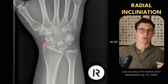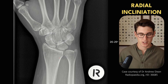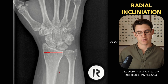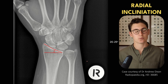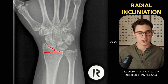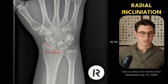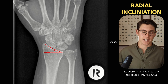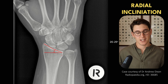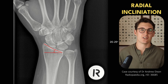Next we can look at what's known as radial inclination. If we take our radius and draw a perpendicular line to the shaft, we can then draw a line along the articular surface and measure this angle — that's the radial inclination angle. That angle should be between 20 and 25 degrees. If we're dealing with less than 15 degrees, we should really suspect some form of distal radial fracture where we've lost that angle. If the angle is more than 25 degrees, we could be dealing with a deformity known as Madelung's deformity.